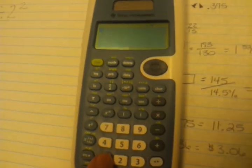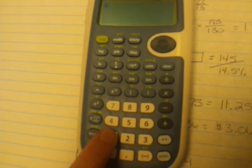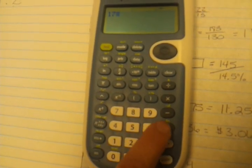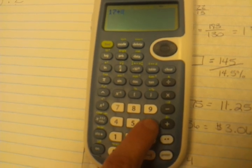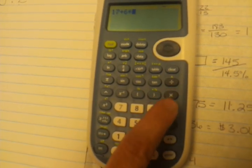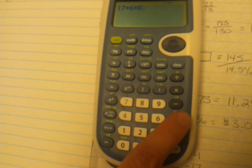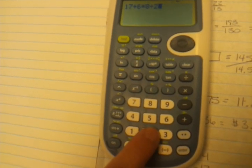So I'm going to move to the calculator and I'm going to do 17 plus 6 times 8 divided by 2. And then to get the squared, notice here the x squared button.